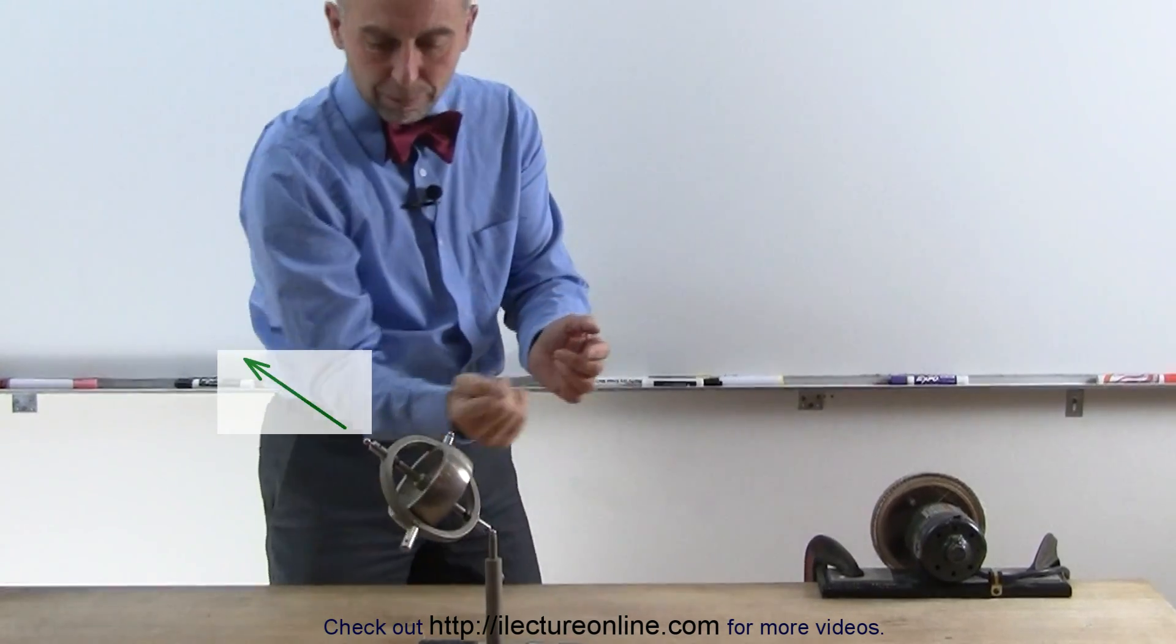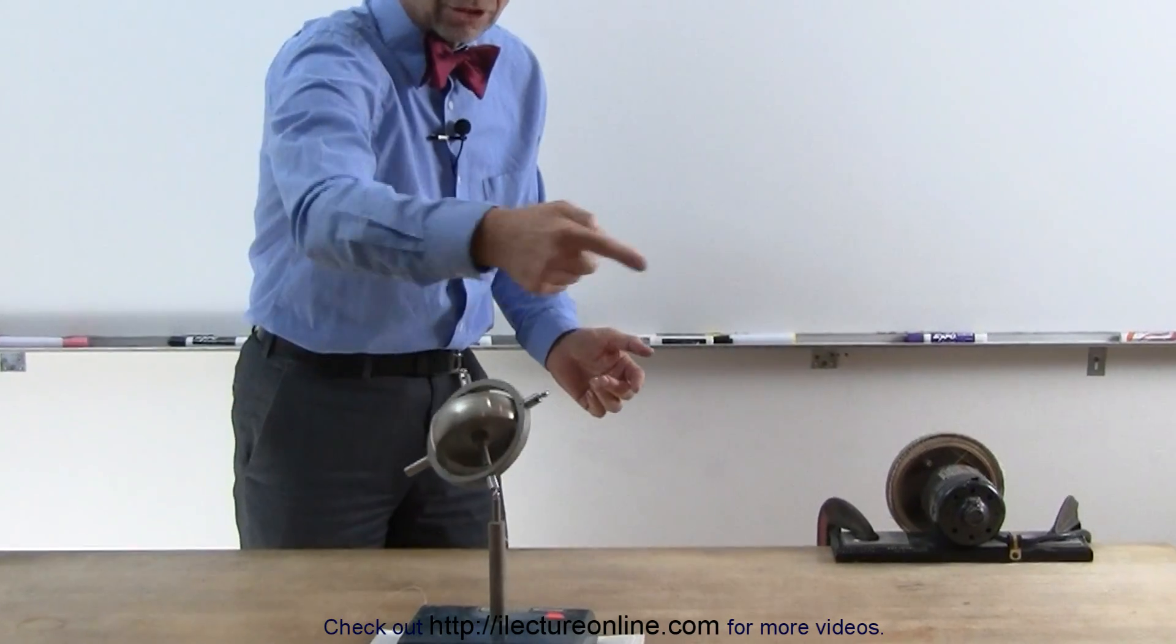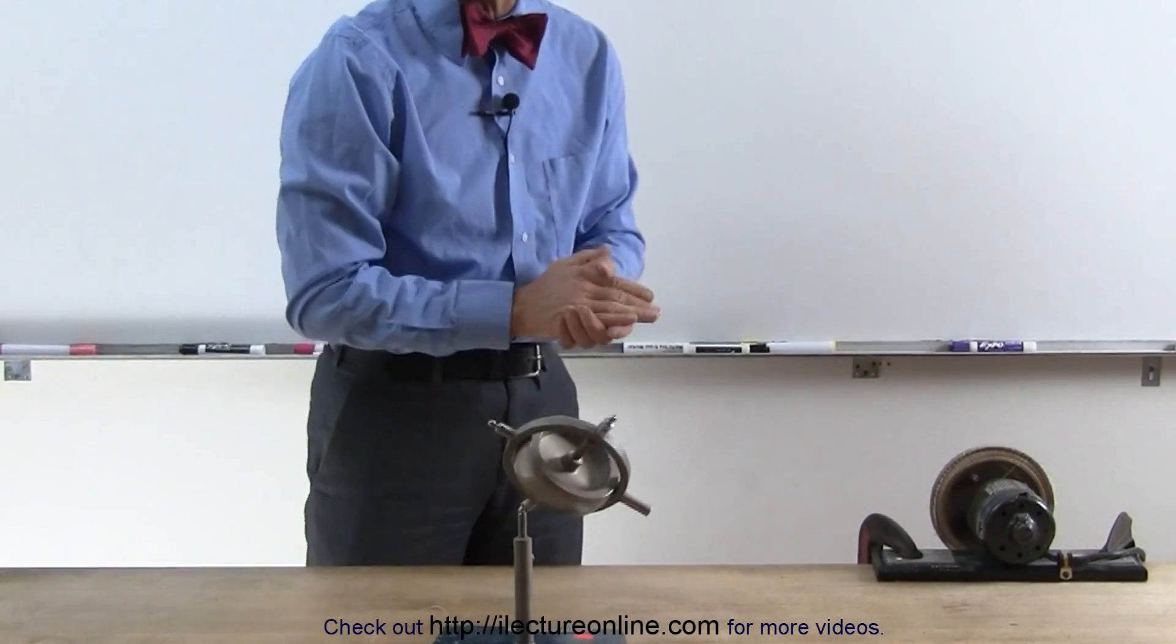By placing it on the stand, there's a torque that causes it to push. The torque causes the gyroscope to be pushed in this direction, which causes that change in the angular momentum.